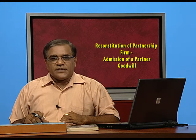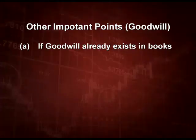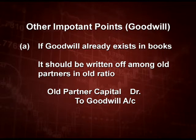If goodwill already exists in the books, according to Accounting Standard 6 issued by the Institute of Chartered Accountants of India, it should be written off as soon as possible because it is a non-productive asset. The old partners must write it off since it belongs to them, and that too in their old ratio. The entry is: Old Partners' Capital Account debit to Goodwill Account in old ratio.